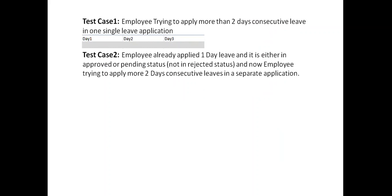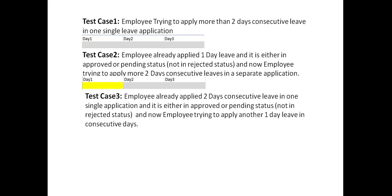Second test case: employee already applied one day leave and it is either in approved or pending status — not in rejected status. Now the employee is trying to apply two more days consecutively in a separate application. So day one is already applied, now day two and day three employee is trying to apply in a separate application. Our Take Rule should restrict this kind of test case as well.